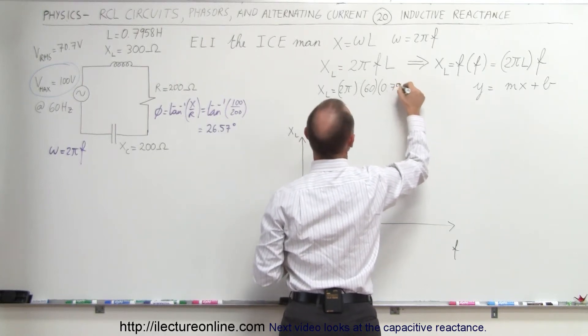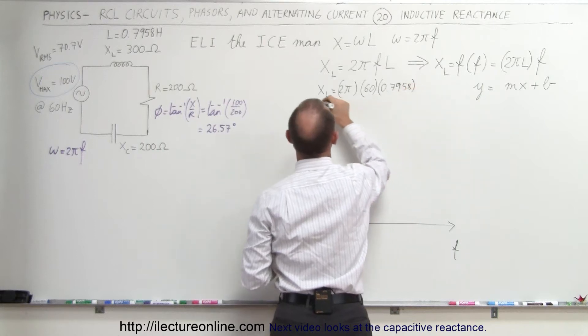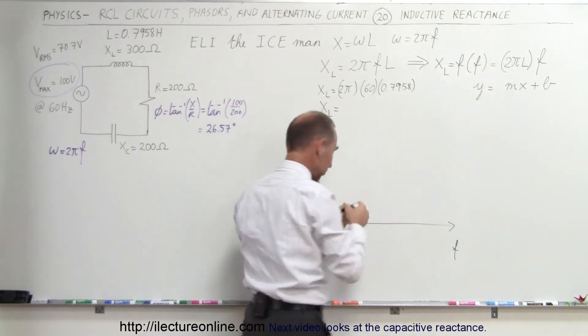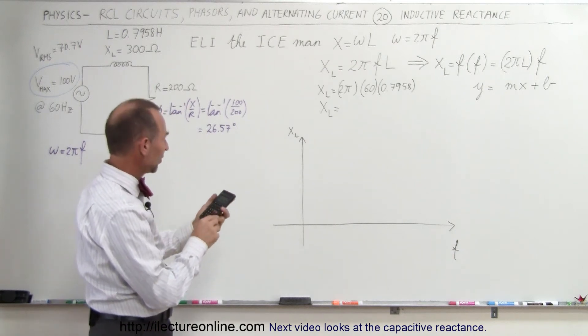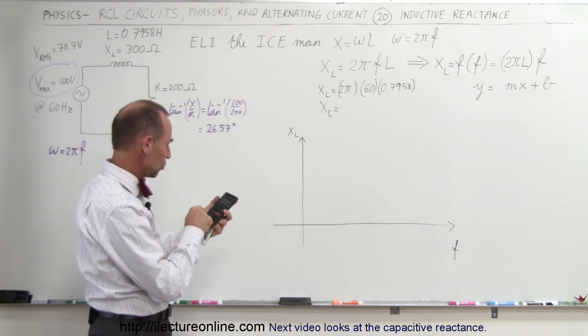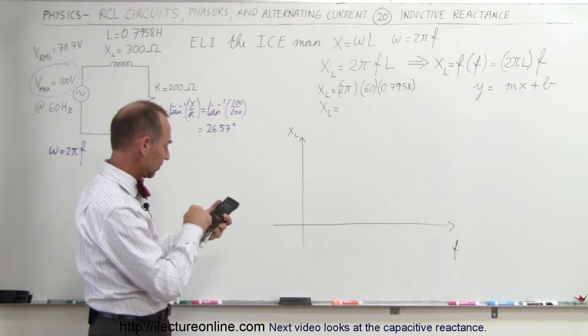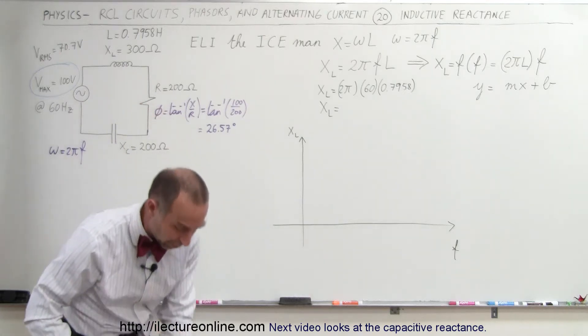...7958, 958 henrys. And so in this case, XL is equal to, let's use a calculator. So we have times 2 times π times 60, and it is 300 ohms.